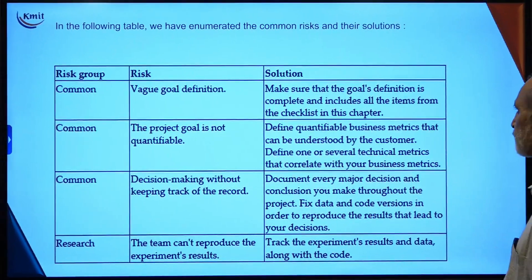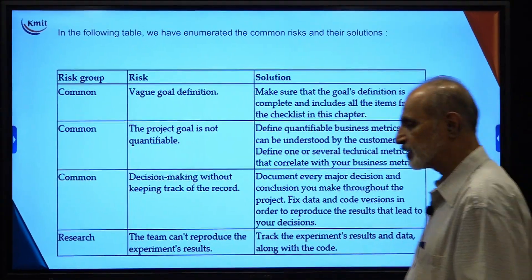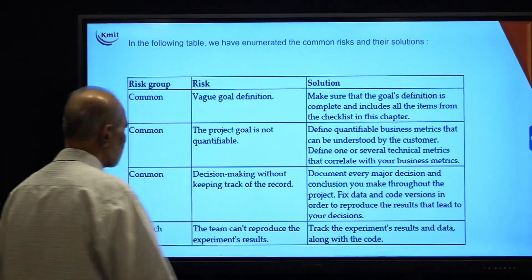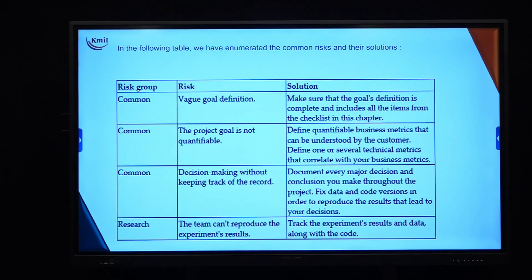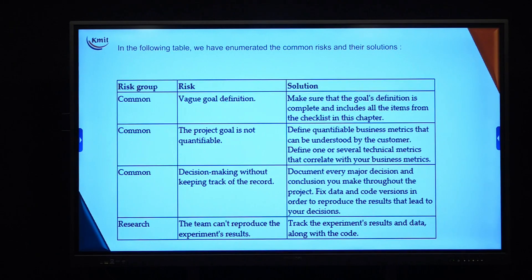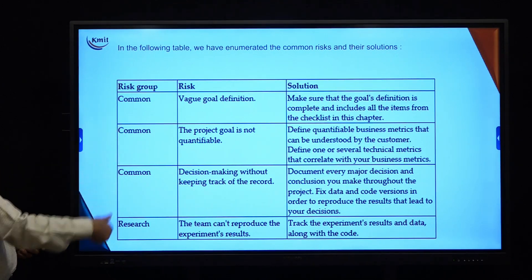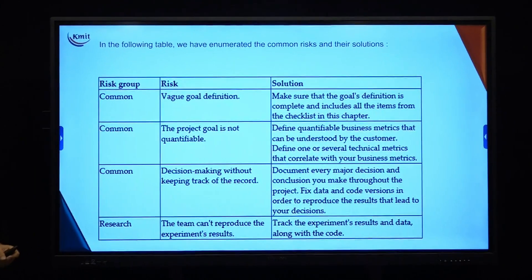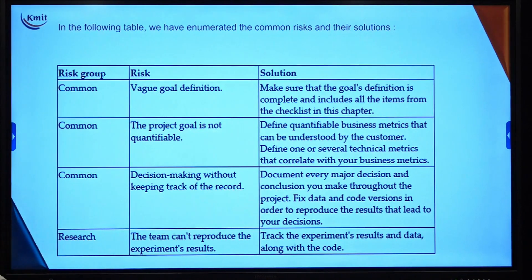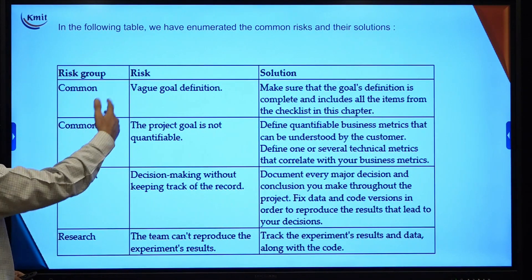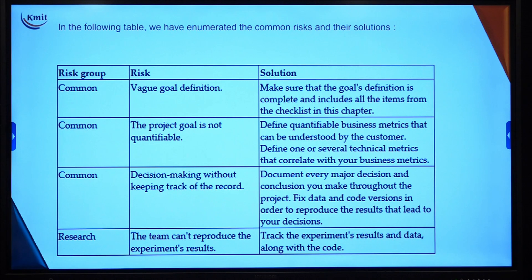A risk table lists the type of risk group, the risk involved, and the solution we are seeking. Under the common risk group, we have: vague goal definition — the solution is to make sure that the goal definition is complete and includes all items from the checklist. Second, project goal is not quantifiable — define quantifiable business metrics that can be understood by the customer, and define one or more technical metrics that correlate with your business metrics.